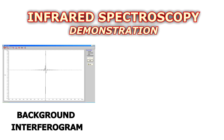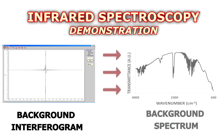Next, a background interferogram is measured and converted into a spectrum. The intense absorption peaks in this spectrum are caused by the moisture and carbon dioxide in the air.